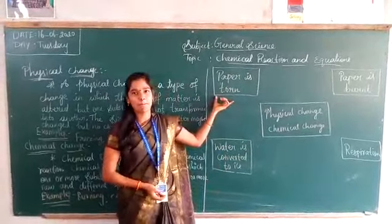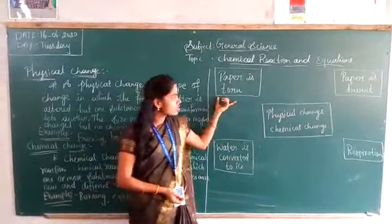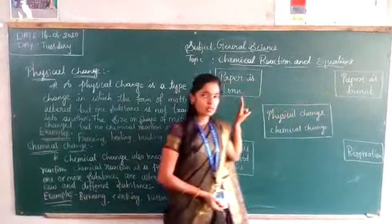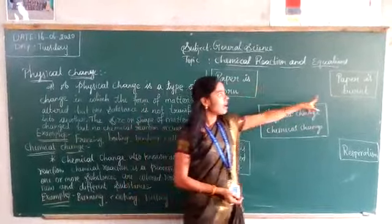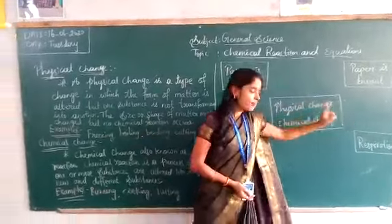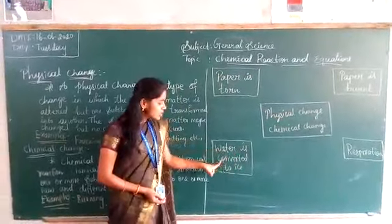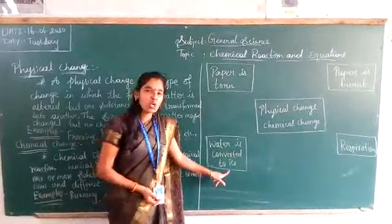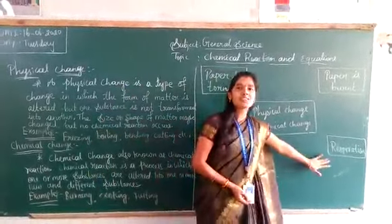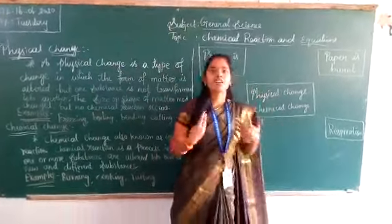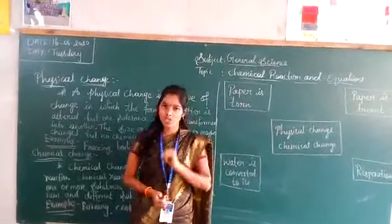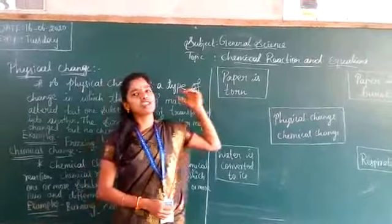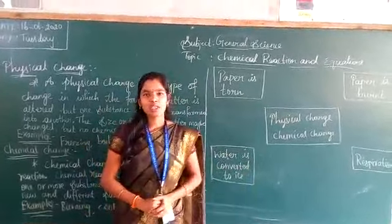First one is paper is torn. Second one is paper is burnt. Third one is water is converted to ice. The fourth one is respiration — we respire. In those four situations, you have to say which is a physical change and which is a chemical change.